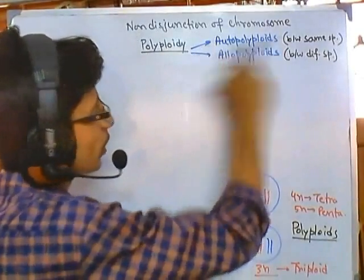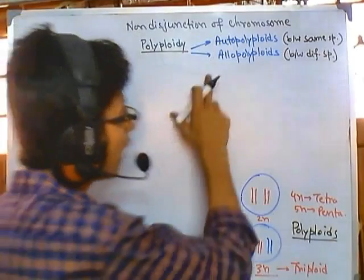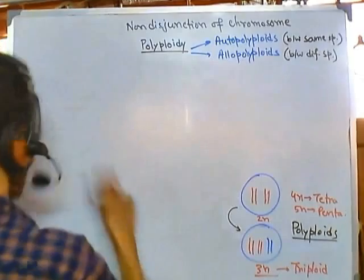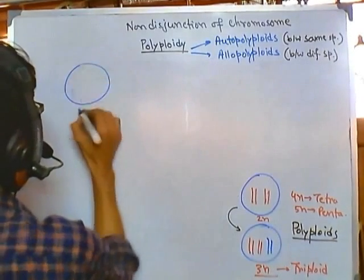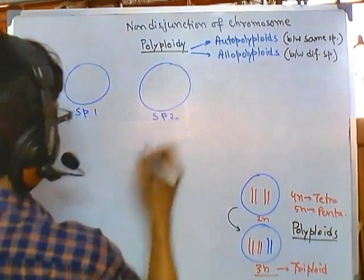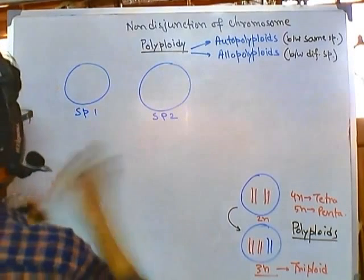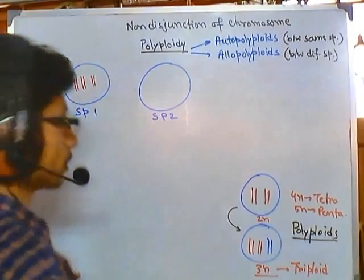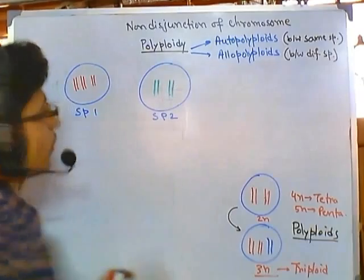Autopolyploidy normally occurs due to mitotic non-disjunction, but allopolyploidy is a bit different. In allopolyploidy, let's say there are two varieties of species — species 1 and species 2 — drawn with different chromosome colors. Species 1 has three sets of chromosomes and species 2 has two sets of chromosomes.